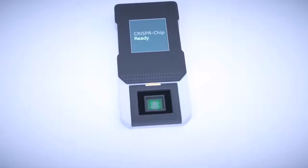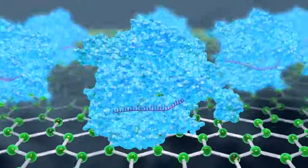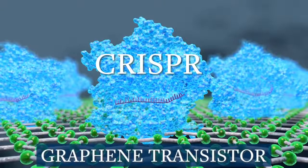CRISPR chip is a handheld device that combines thousands of CRISPR molecules with a graphene transistor.